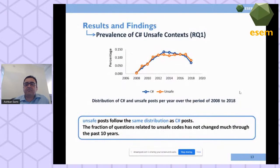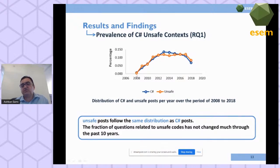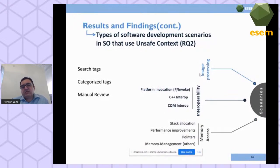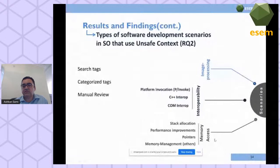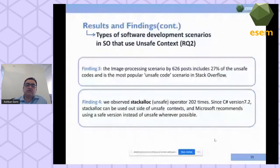For the first question on prevalence, the percentage of C# unsafe code usage compared to total C# code remained consistent over the 10-year period — unsafe is still a popular method and programmers continue to use it. For the second question on usage contexts, three main categories were found through tag analysis and manual review: image processing; interoperability (such as C++ interoperability or COM interoperability); and memory access using stack allocations and pointer manipulation for performance improvements.